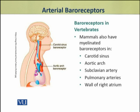In addition to the unmyelinated baroreceptors, mammals also have myelinated baroreceptors in the carotid sinus, in their aortic arch, in the subclavian artery, in the pulmonary arteries, and in the wall of the right atrium.